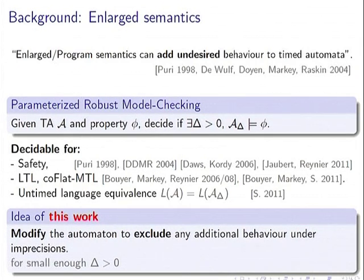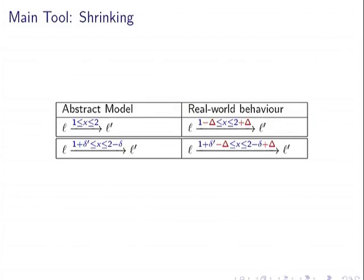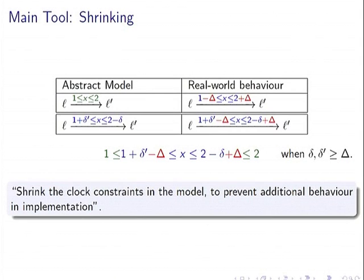Our main tool is shrinking. The idea is simple: if you have a guard in your timed automaton, because of imprecisions the real-world behavior gets enlarged — causing extra additional behavior. To prevent this, shrink the guard: replace 2 by 2 − δ and 1 by 1 − δ'. If you choose these parameters correctly, the real-world behavior will be included in the intended behavior, between 1 and 2. The idea is to shrink more than what will get enlarged, preventing any additional behavior.